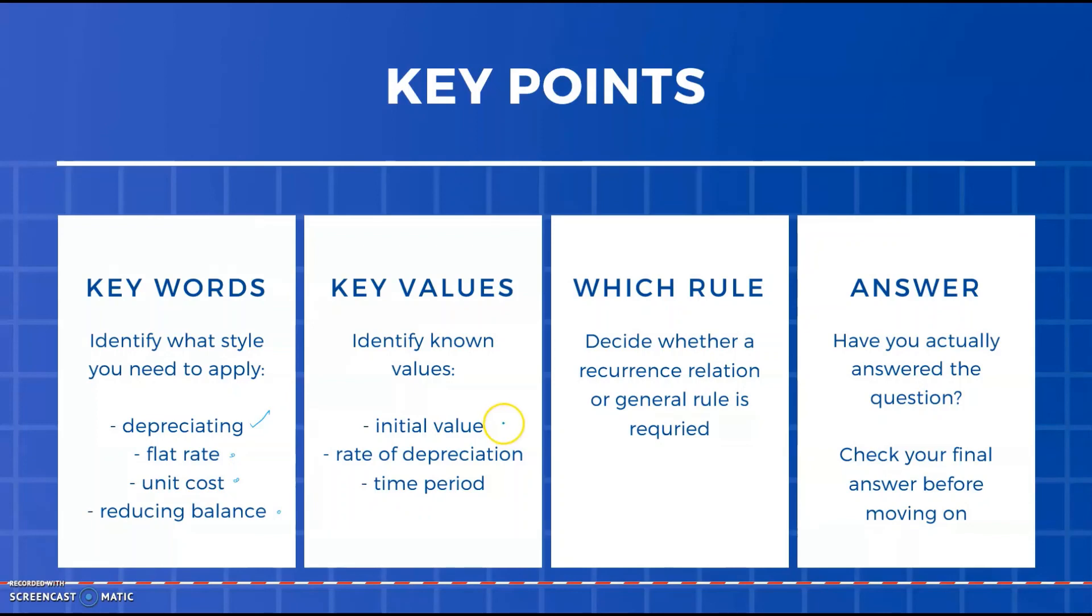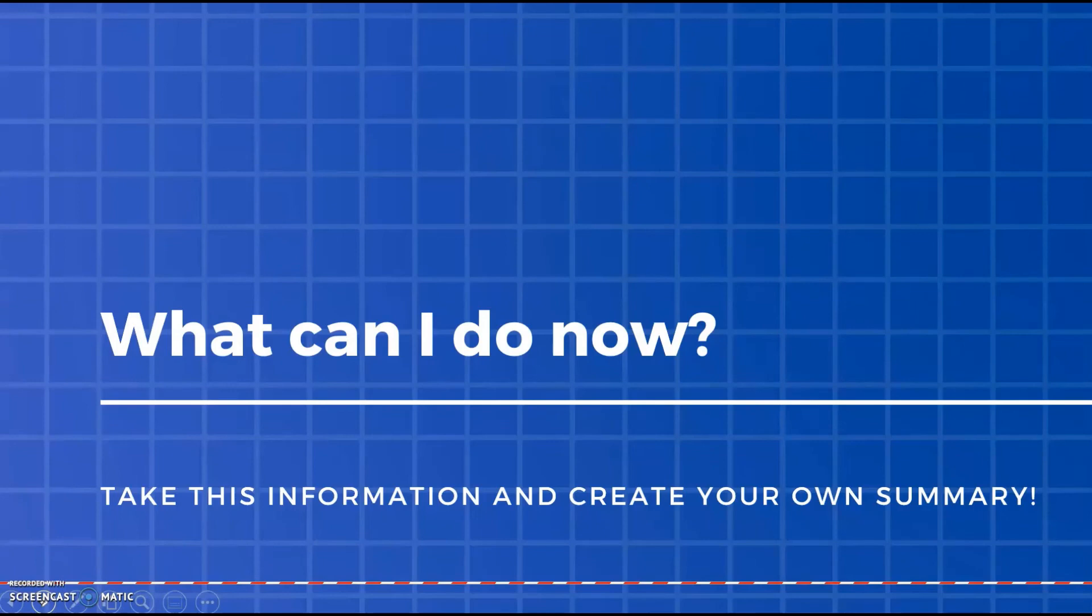Identify your key values as you're working through. The initial value will often be given to you worded in the question or spelt out as a recurrence relation, so identify that and know what it means. Then look for things like what is the rate of depreciation and how long are we working for. Once you have those things, decide which rule you want to use - is it a recurrence relation or the general rule which will help you get your answer. Finally, once you write down your answer, just check have I actually answered the question, did I actually give what they were after. Make sure you take what you've got from here and put it into a format in your bound references that will help you answer questions as they come up and good luck.